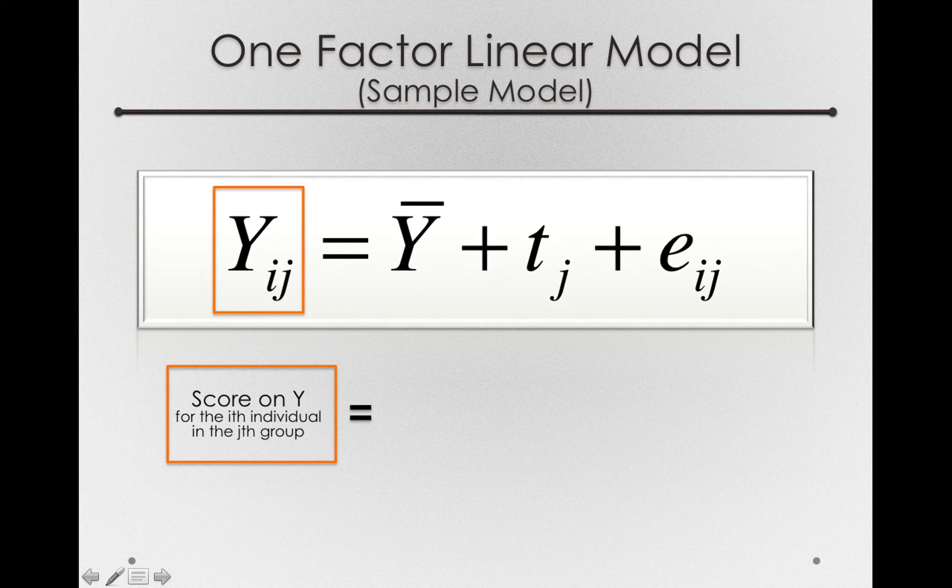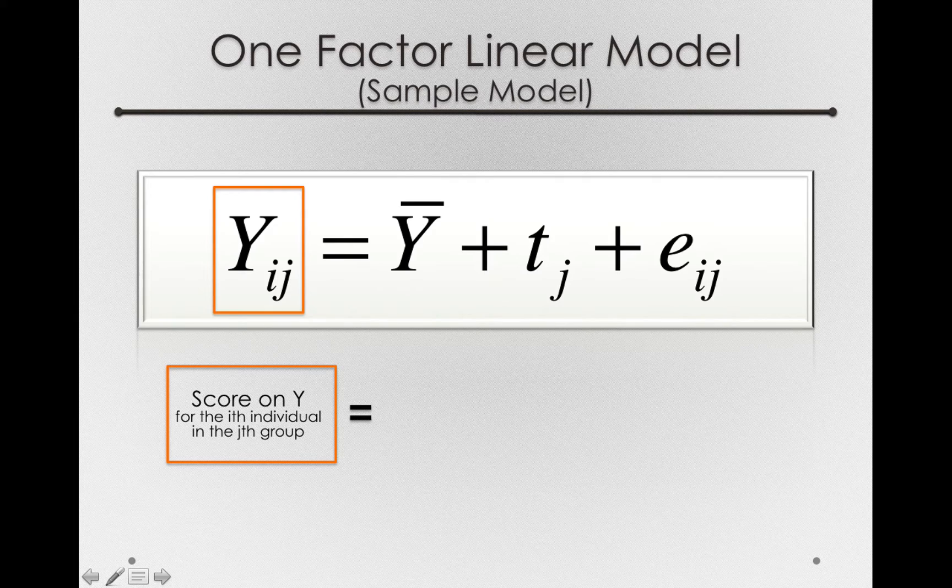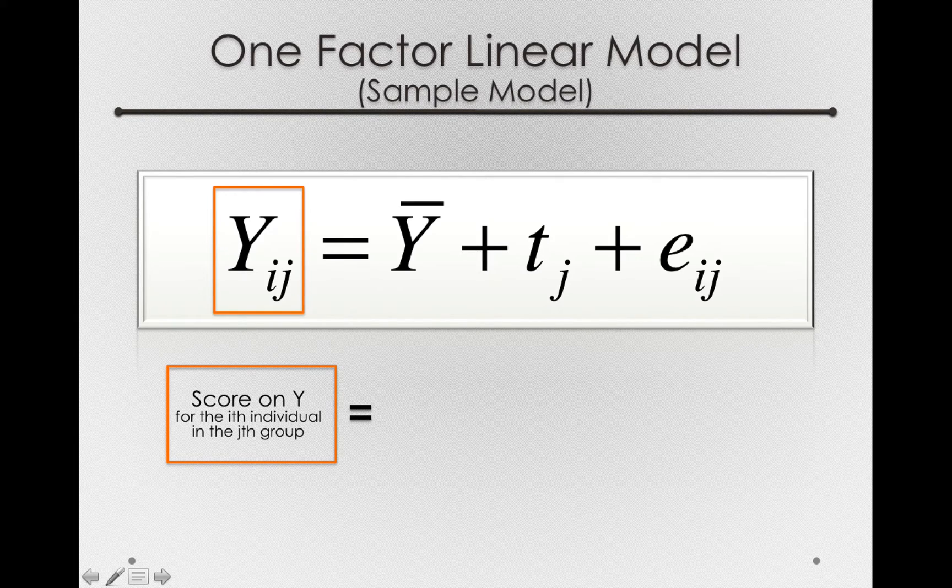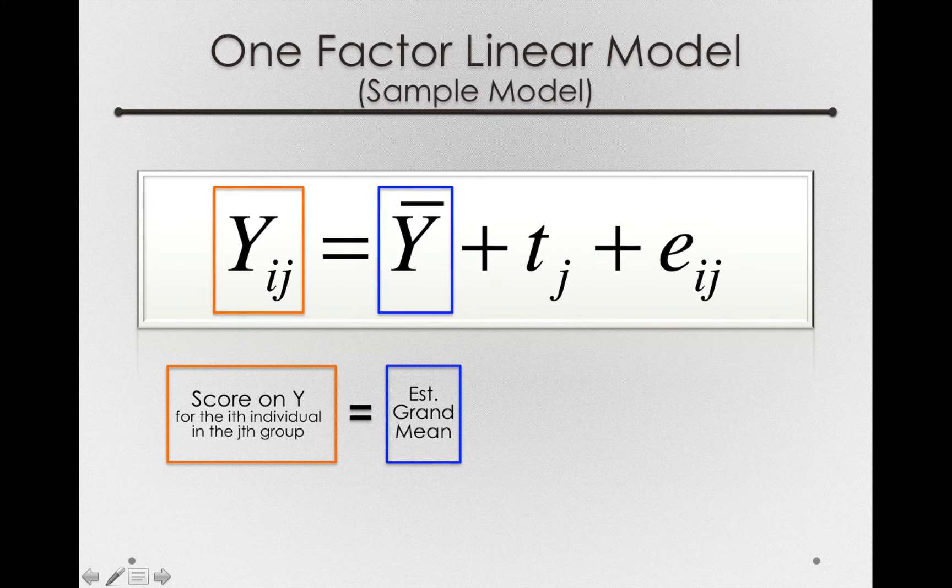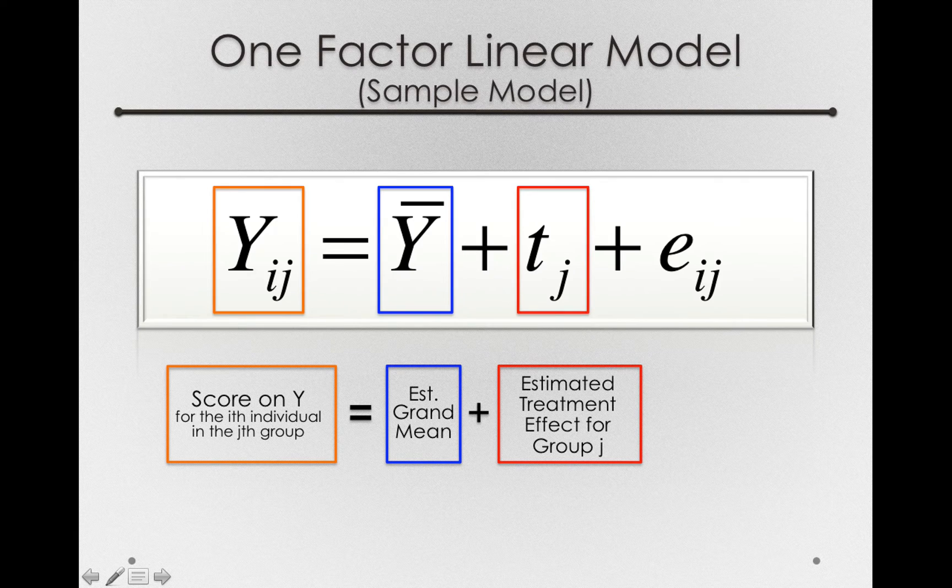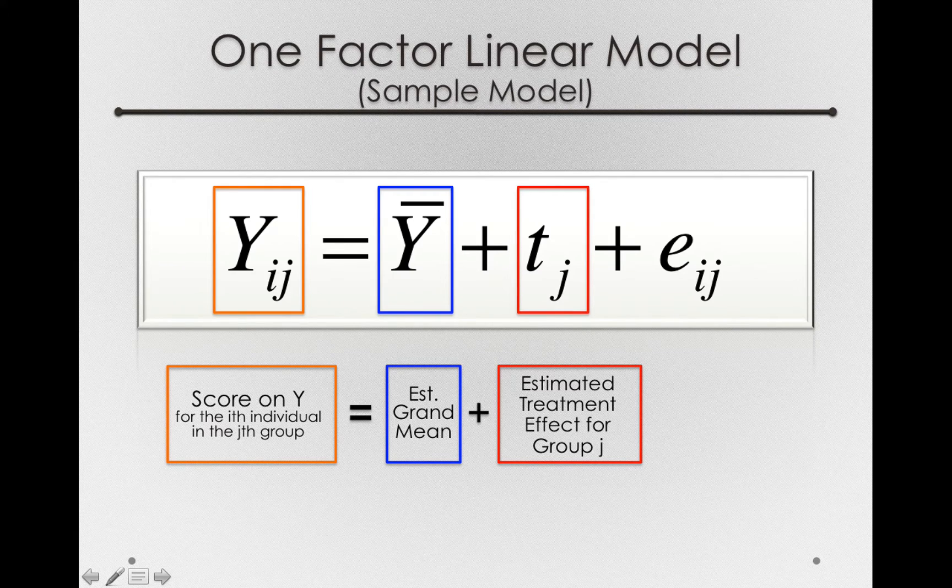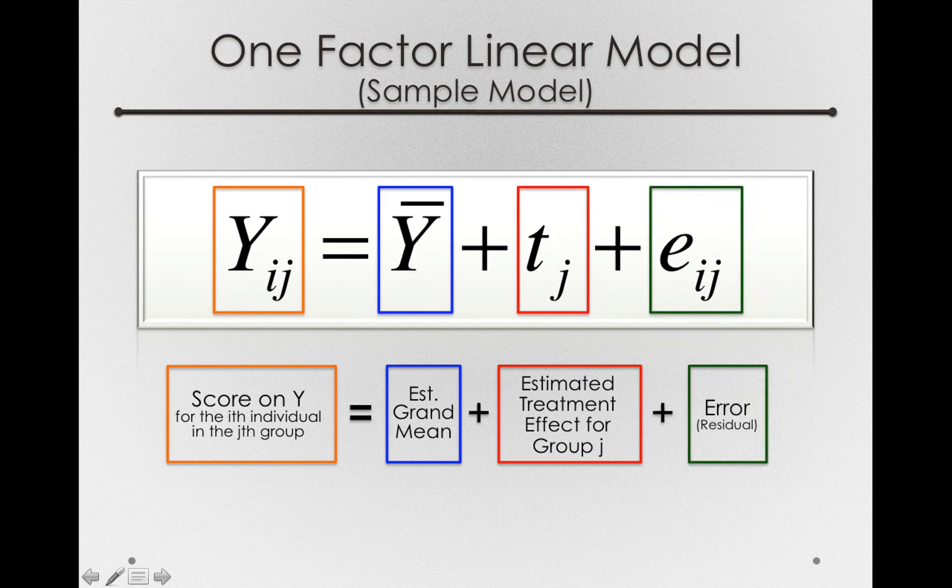But we have the same components. We're still trying to describe the score on Y for the i-th individual in the j-th group. And we're describing the score as a function of the estimated grand mean, the Y-bar, plus t sub j's, the estimated treatment effect for each group sub j, and plus e sub ij.